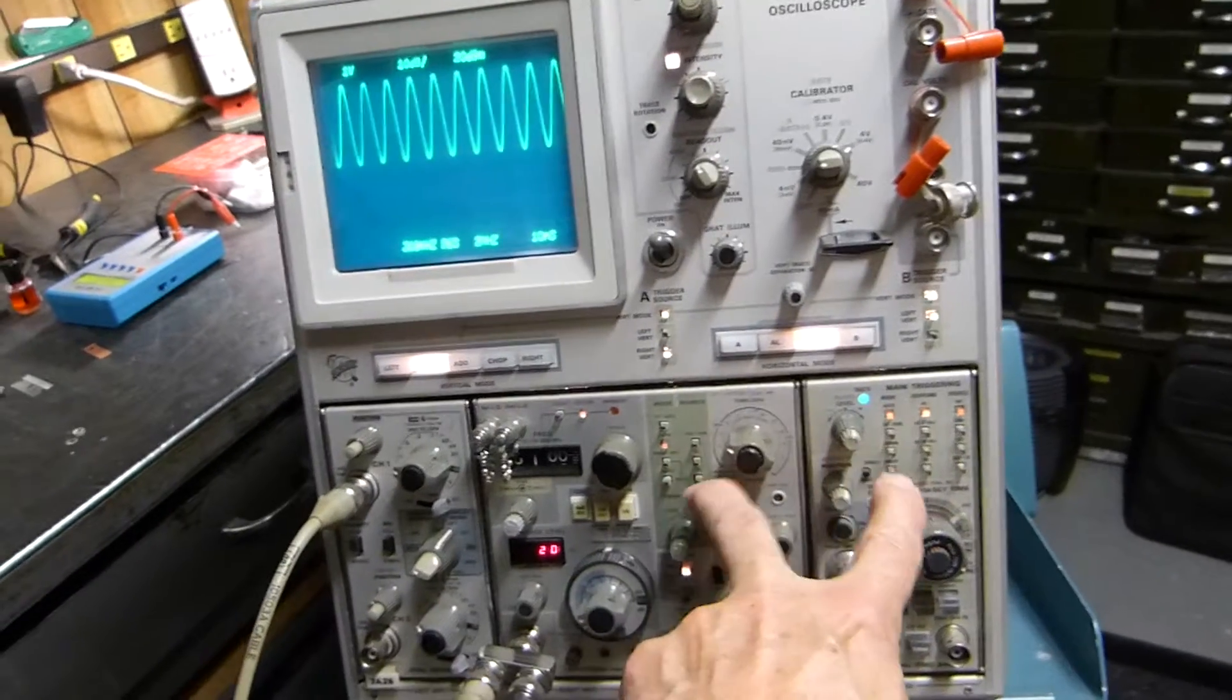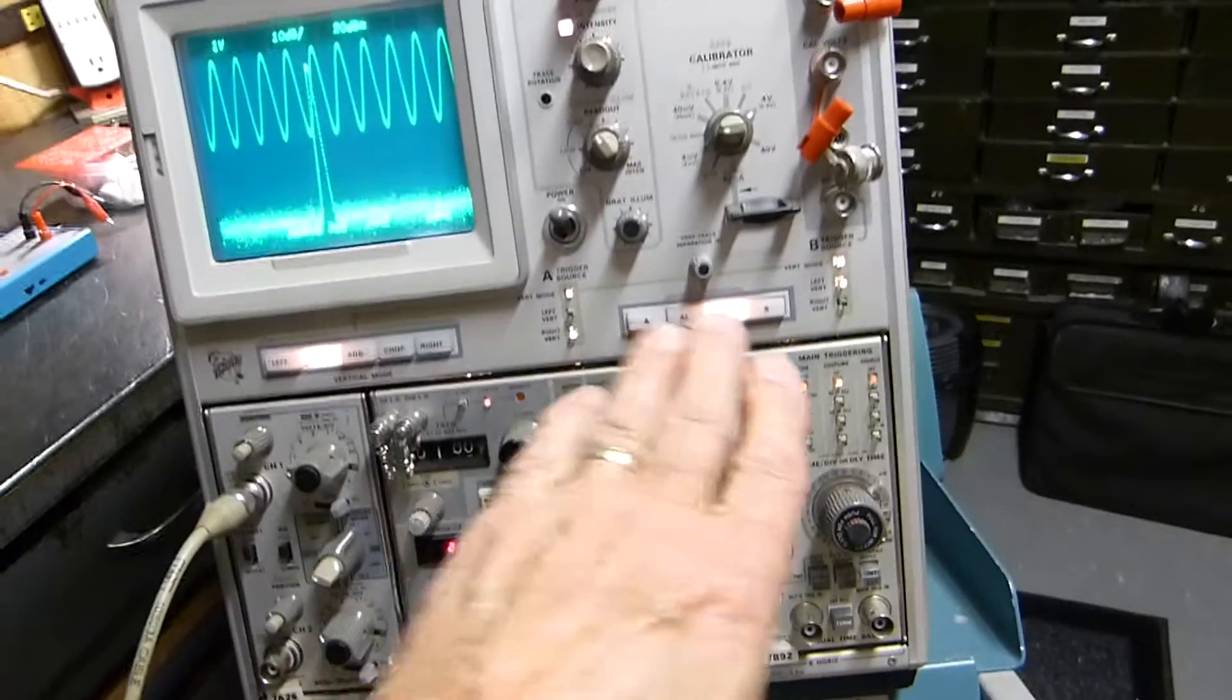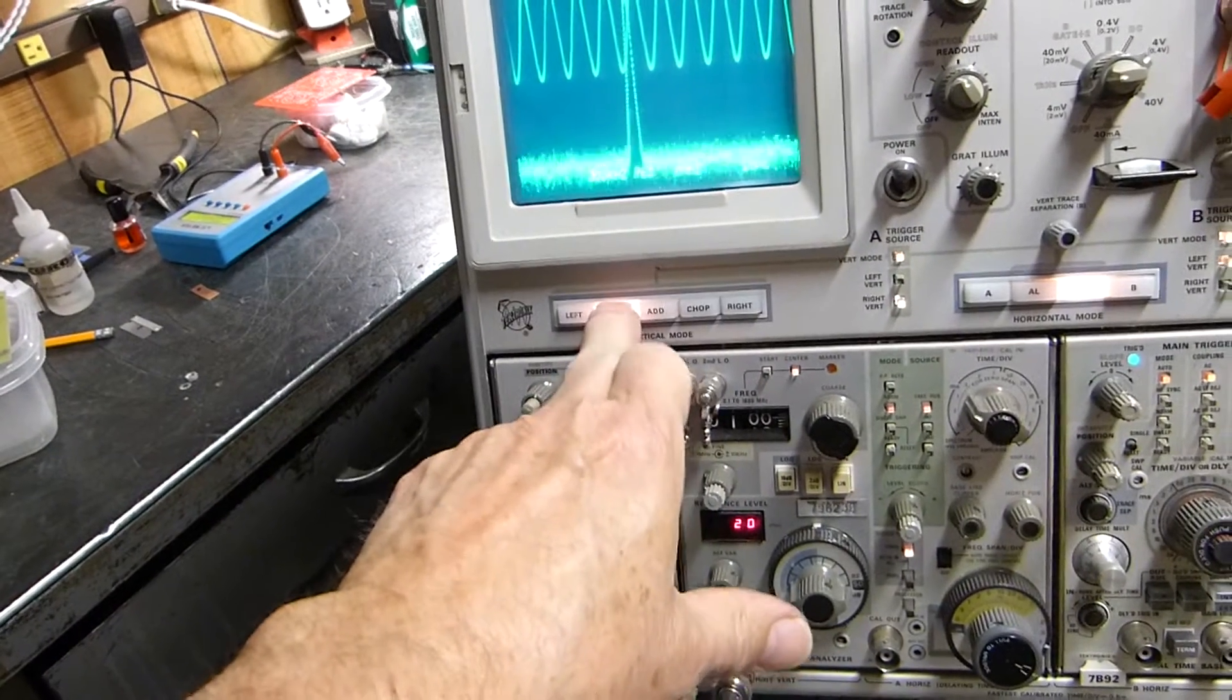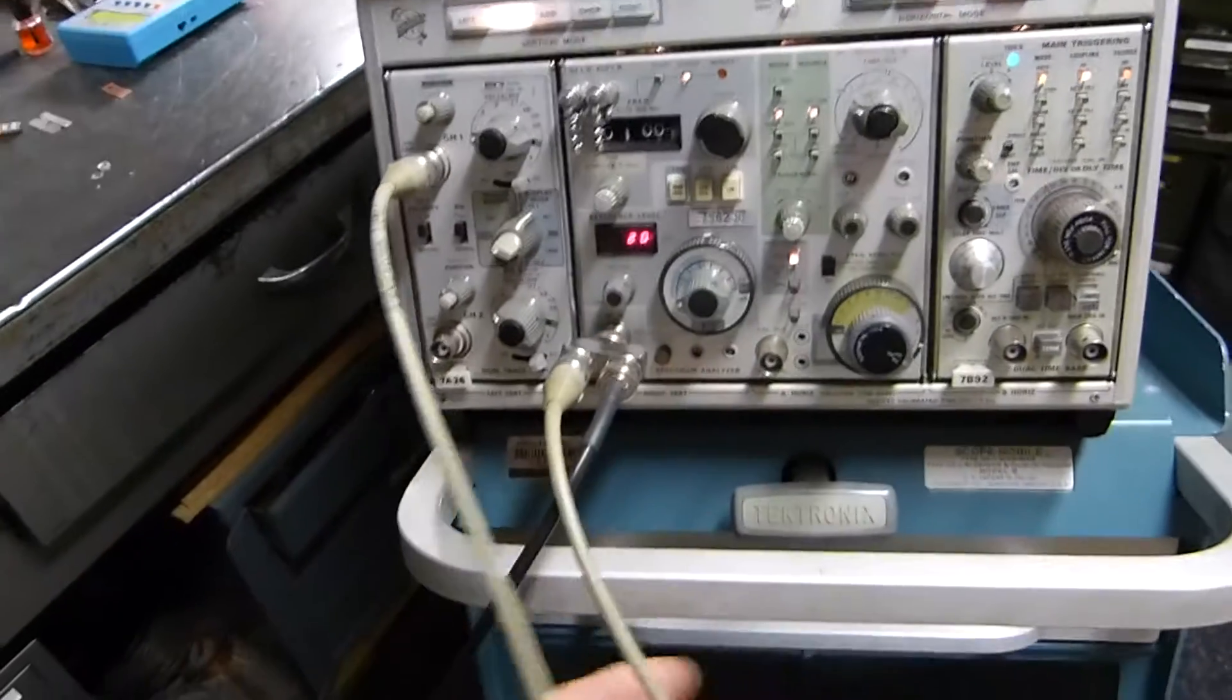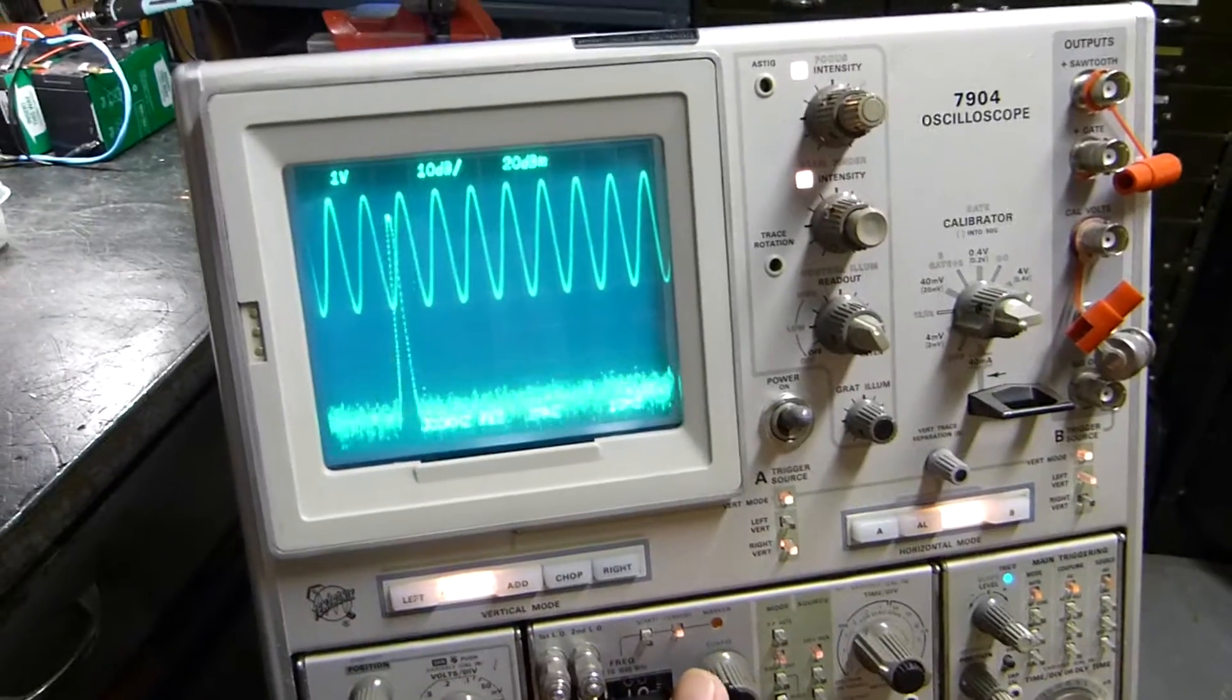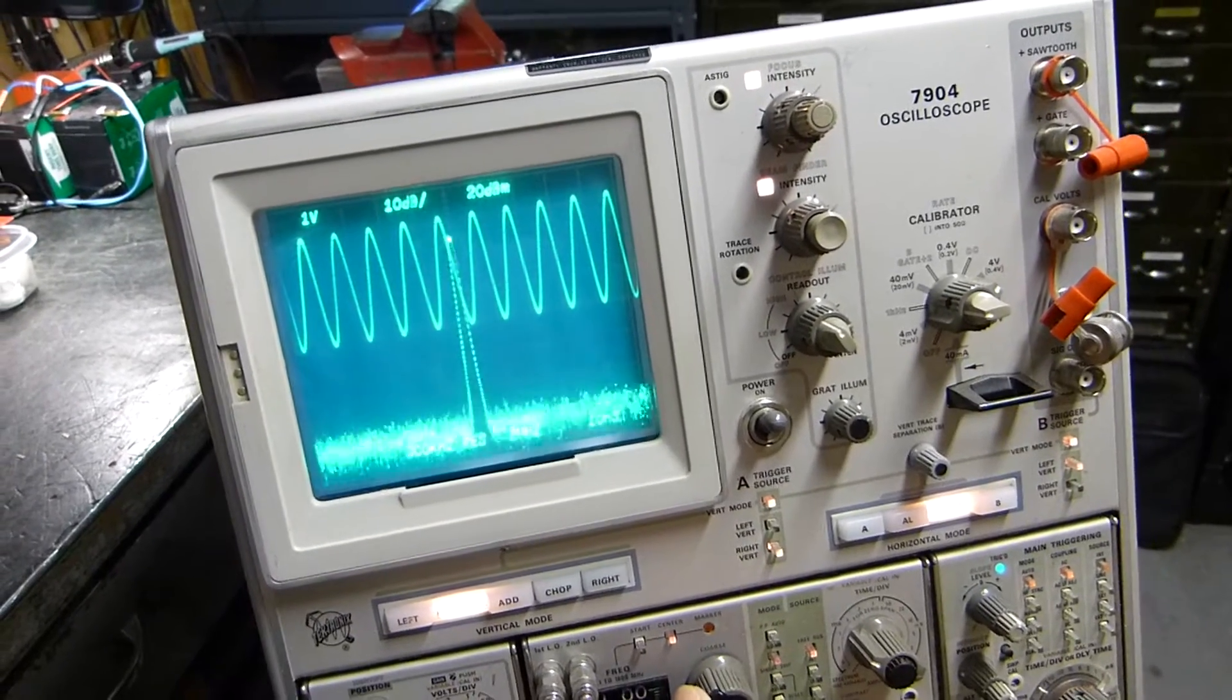Isn't that neat? I got it in chop mode so I'm chopping between these two vertical channels and I got the horizontal channels chopped too. I'm chopping the horizontal channels and I'm chopping the vertical channels, or alternating the vertical and chopping the horizontal. See I got the same signal going in on both of them, it's just looped around right there.